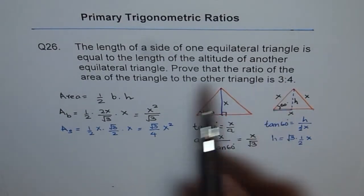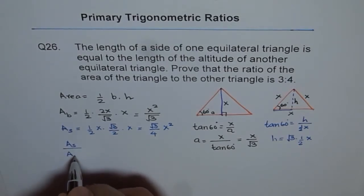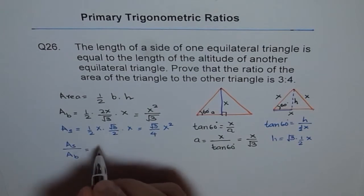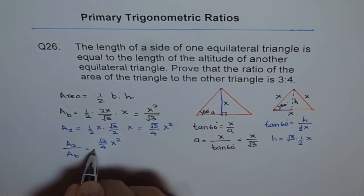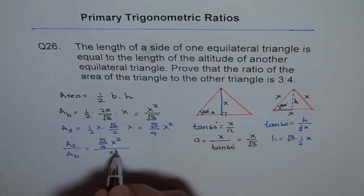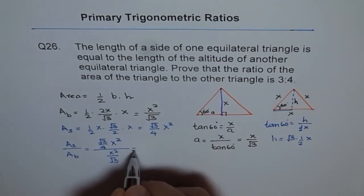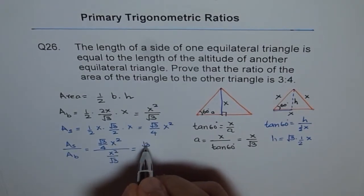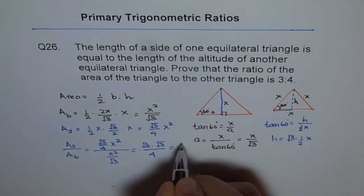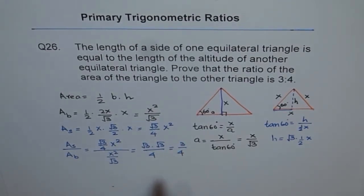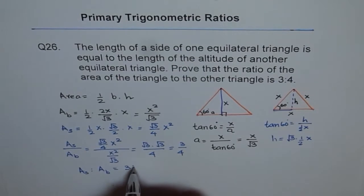Now we need to find the ratio of areas of the triangles. The ratio of the small triangle to the big triangle is (√3/4 · x²) divided by (x²/√3). The x squared terms cancel and we get square root of 3 times square root of 3 over 4, which is 3 is to 4. We have proved that the area of the small triangle to the area of the big triangle is equal to 3 is to 4.